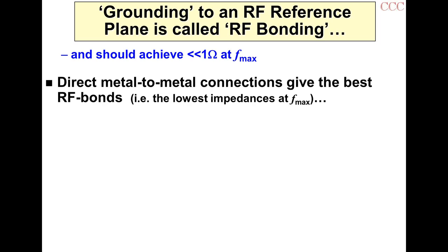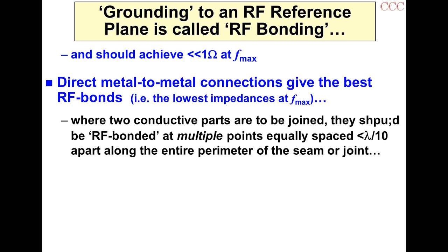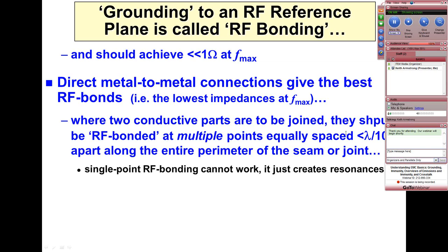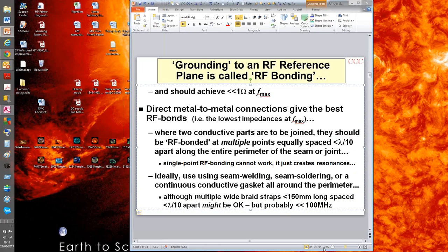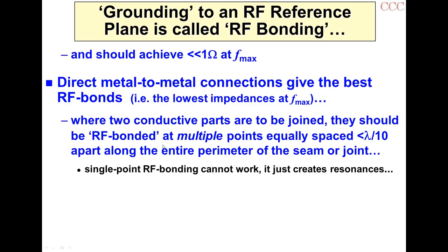We prefer direct metal-to-metal connections — they give us the best RF bonds and lowest impedances at high frequency. If you have to join two conductive parts together, such as a filter body and a chassis, they should be RF bonded at multiple points with equal spacing, less than lambda over 10 apart, along the entire perimeter of the seam or joint. Single-point bonding just creates resonances.